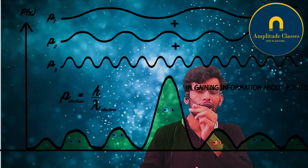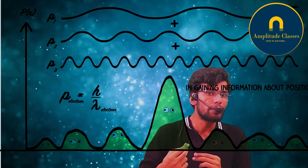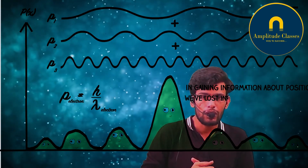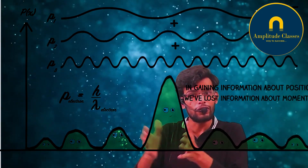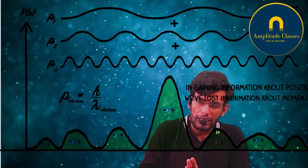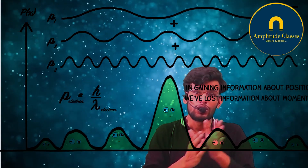Since p = h/λ, and because many waves of different wavelengths are present, each wave contributes a different momentum. So if you superimpose many waves to localize the position, the different wavelengths cause the uncertainty in momentum to keep increasing. Using the de Broglie hypothesis and the wave packet concept you can explain the uncertainty principle: as you make position more precise, momentum uncertainty grows.